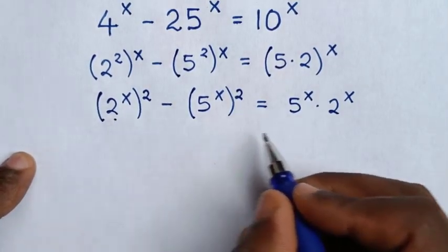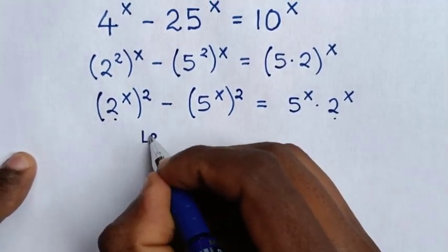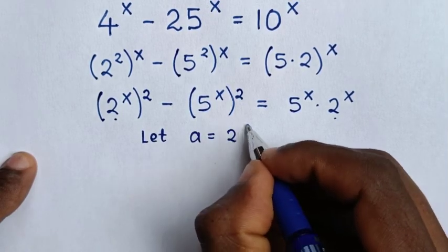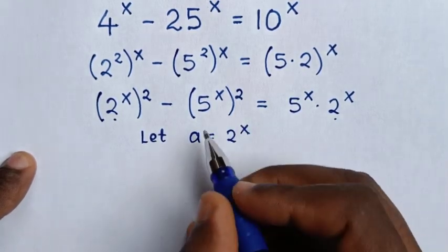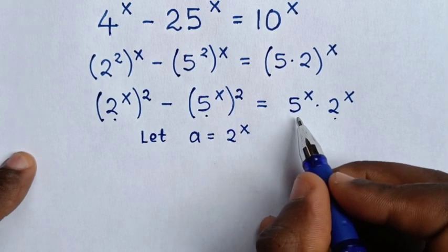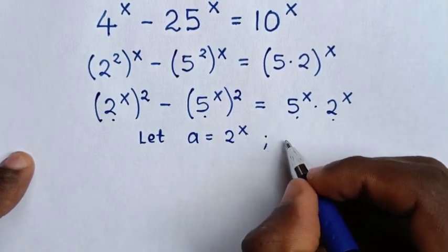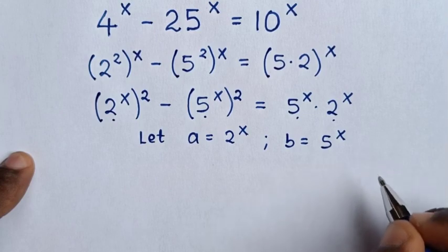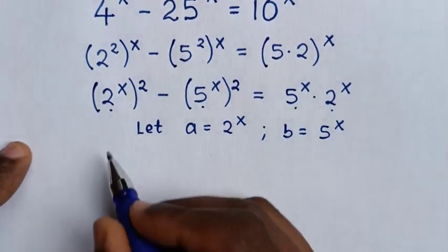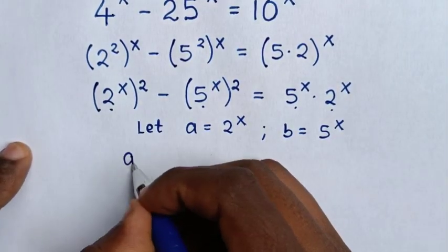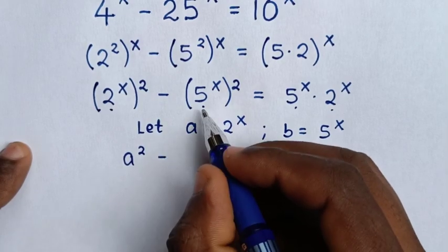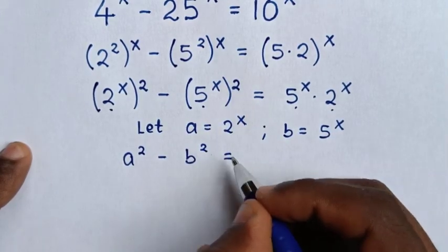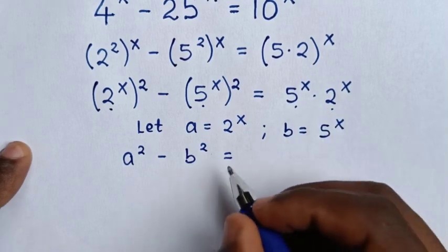From here, 2^x is common, so we let a equal 2^x. And 5^x is common, so we let b equal 5^x. Then the equation becomes a squared minus b squared equals a times b.